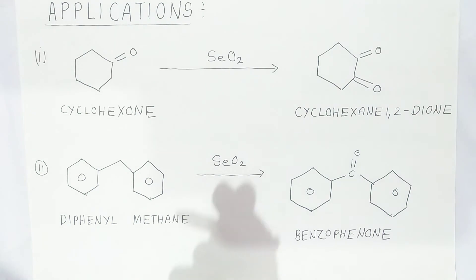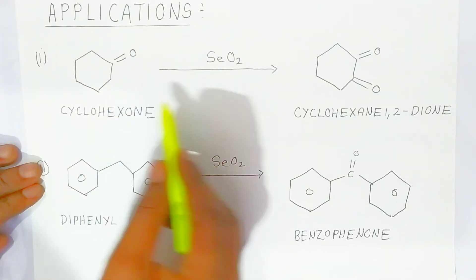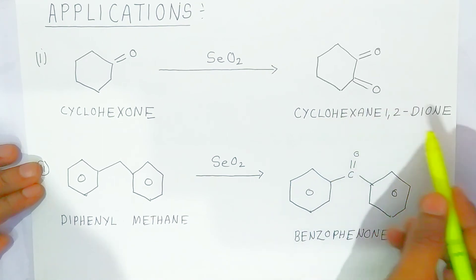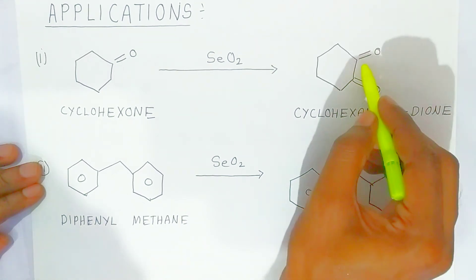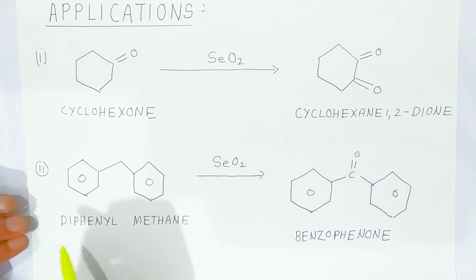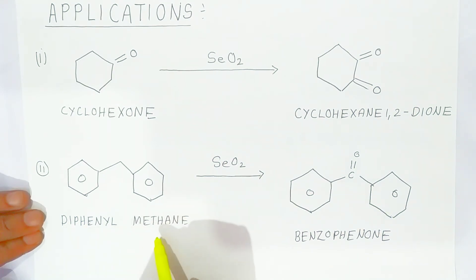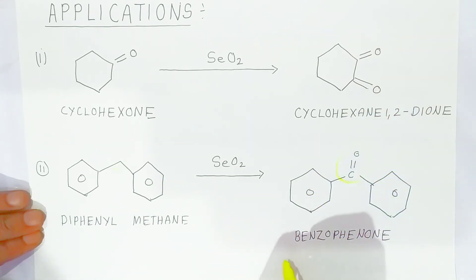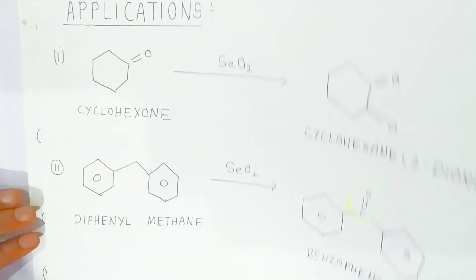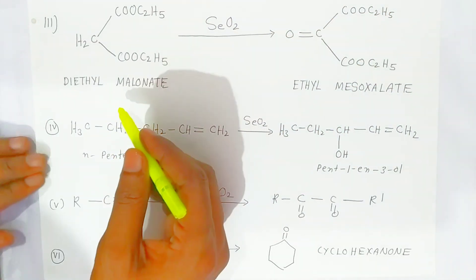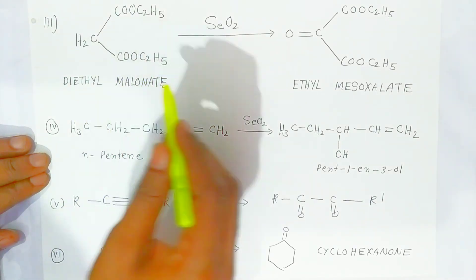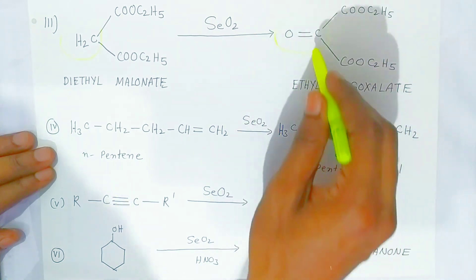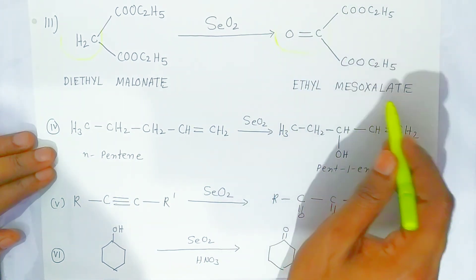Applications of selenium dioxide: cyclohexanone in the presence of selenium dioxide is converted into cyclohexane-1,2-dione. Diphenylmethane — the methane group is converted into a ketonic group — we call this benzophenone. Diethyl malonate — the methylene group is converted into a ketonic group, that is ethyl mesoxalate.